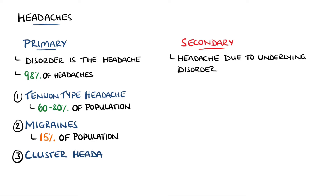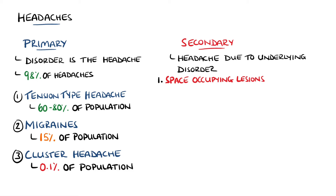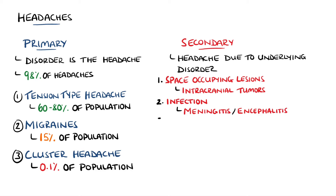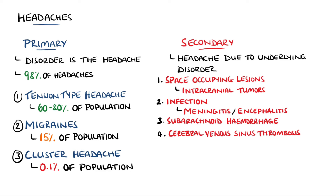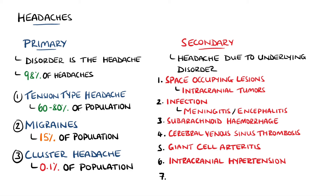Secondary headaches can come from conditions such as space-occupying lesions, most commonly intracranial tumors. They may also come from infections such as meningitis or encephalitis, as well as subarachnoid hemorrhage, cerebral venous sinus thrombosis, giant cell arthritis, and intracranial hypertension. Medication overuse headache is another type of secondary headache that often coexists with primary headaches.